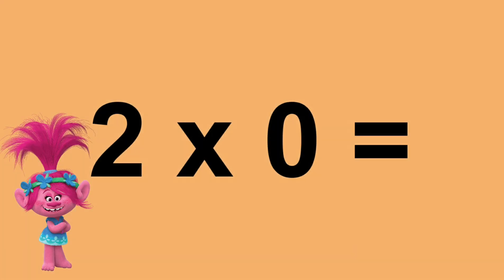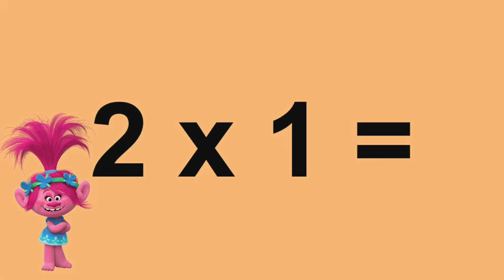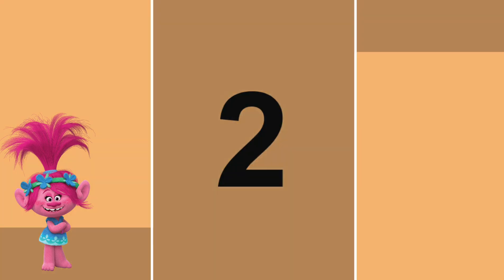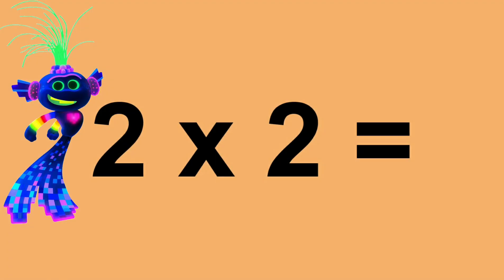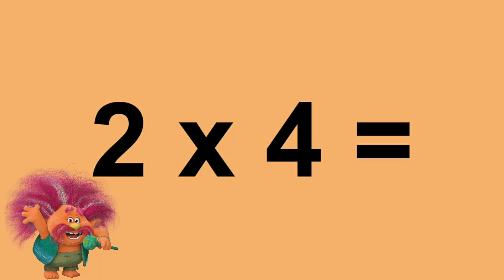Two times zero equals zero. Two times one equals two. Two times two equals four. Two times three equals six. Two times four equals eight.